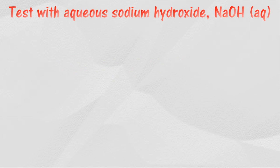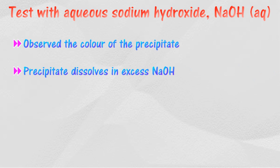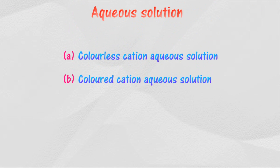Sodium hydroxide is often used to identify cations during qualitative analysis. Sodium hydroxide provides hydroxide ions to be combined with the cations. Cations can be identified by observing the color of the precipitate formed, whether or not the precipitate dissolves in excess sodium hydroxide in aqueous solution. Cations can be classified into colorless cation aqueous solution and colored cation aqueous solution.